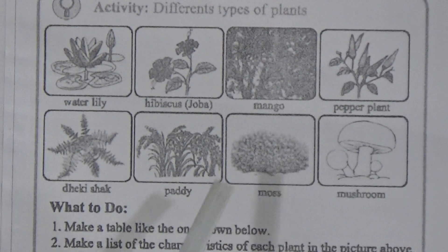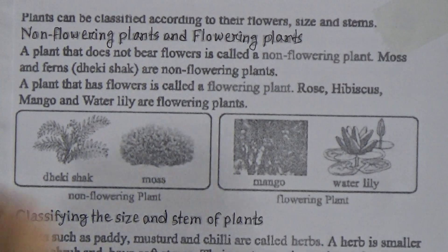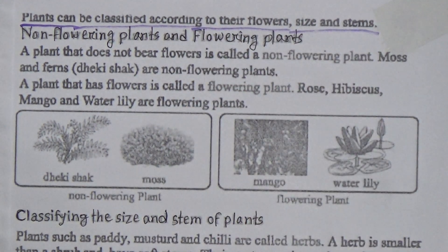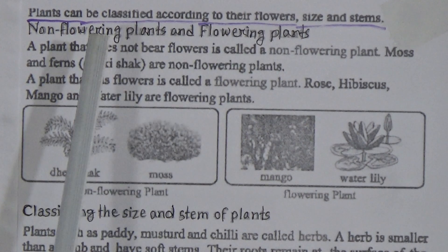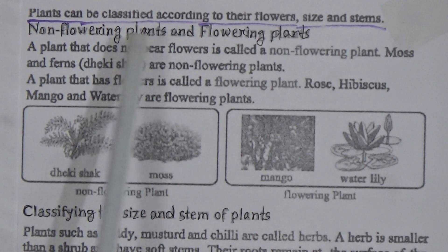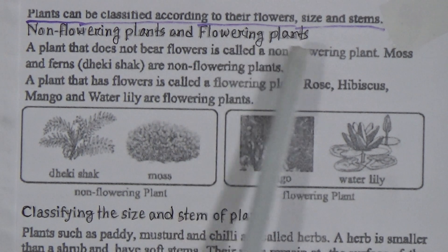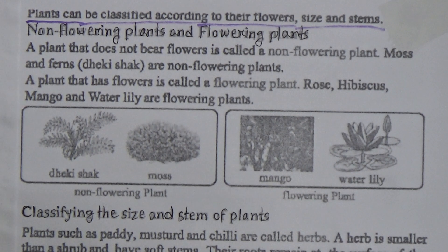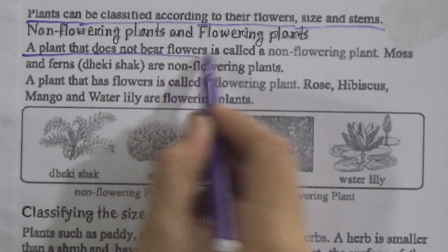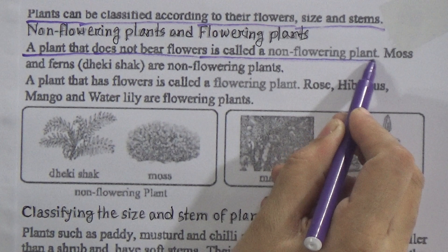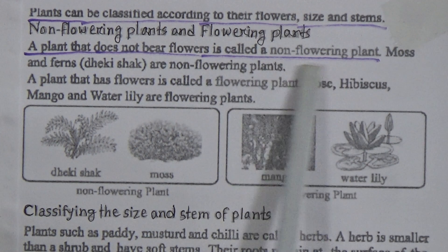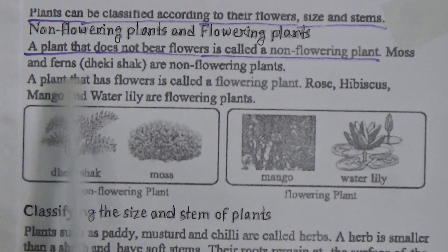Plants can be classified according to their flowers, size and stems. Underline this. Plants can be classified into two types: non-flowering plants and flowering plants. A plant that does not bear flowers is called a non-flowering plant. Underline this line and memorize it - it is also a question-answer.